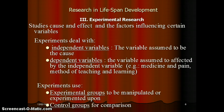Experimental research studies cause and effect and the factors influencing certain variables. Experiments — as the word suggests — involve doing experiments. The independent variable is the variable assumed to be the cause. The dependent variable is the variable assumed to be affected by the independent variable. Examples include medicine and pain, and method of teaching and learning.